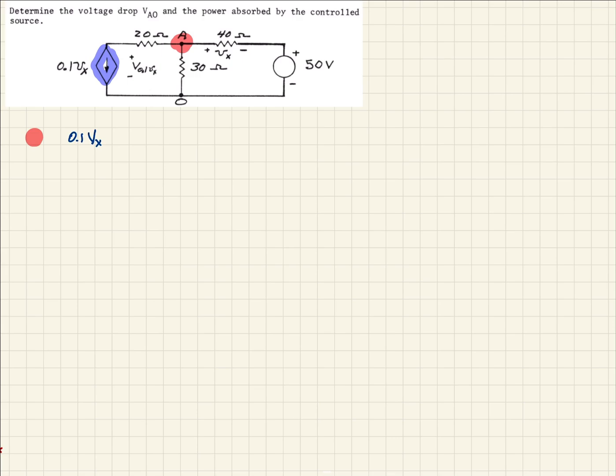And then if we look in the next direction, which would be this direction, then we see that by Ohm's law, this would just be VA0, which is the voltage, over the resistance, which is 30.